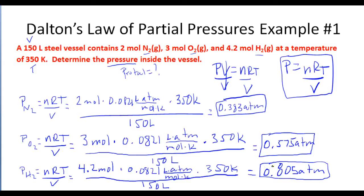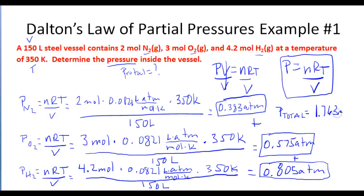Now that we have the individual partial pressures of each gas, we add them up to get the total pressure. Taking 0.383 plus 0.575 plus 0.805, we end up with 1.763 atmospheres. So the total pressure inside this container is 1.763 atmospheres.